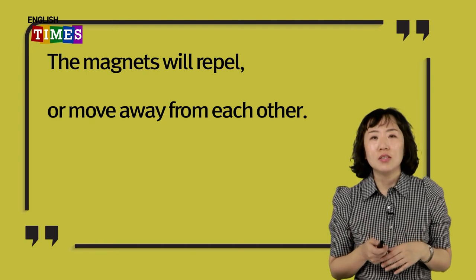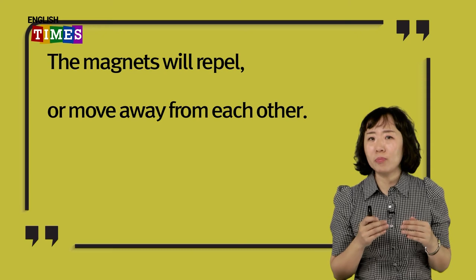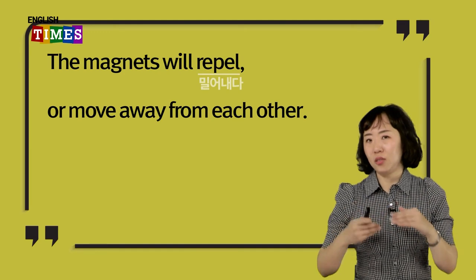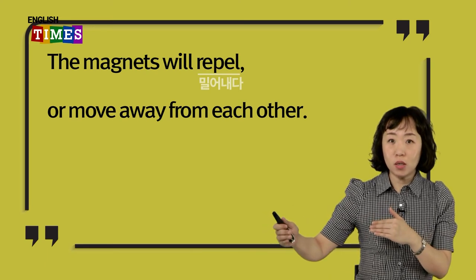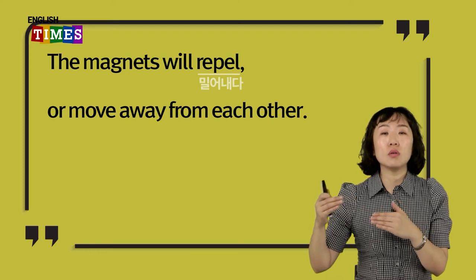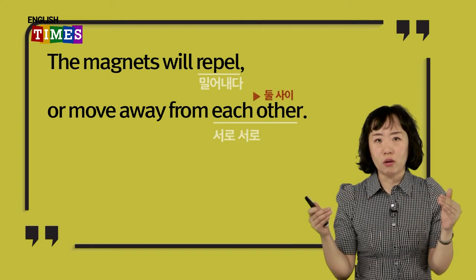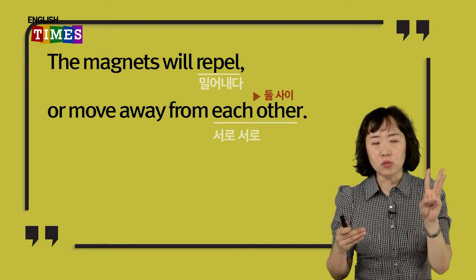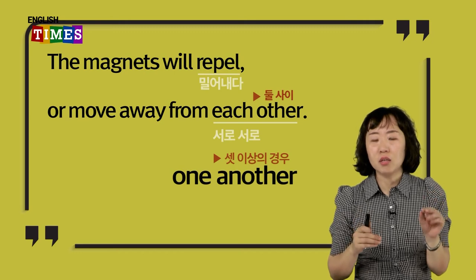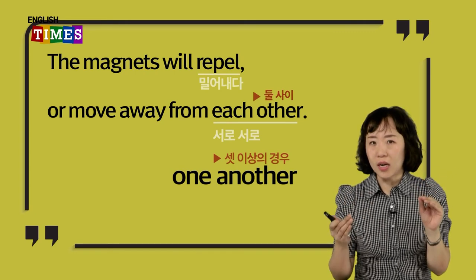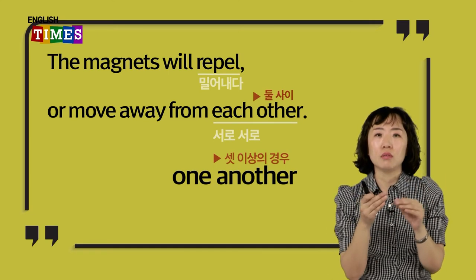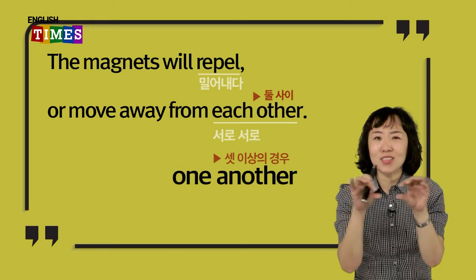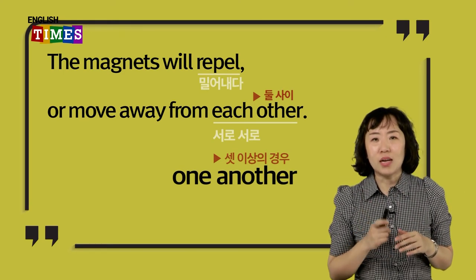Last sentence: 'The magnets will repel, or move away from each other.' Repel means to push away. 'Move away' — move means to move, and 'away' means far or distant. 'Each other' is used when there are two — for three or more, use 'one another.' So: the magnets will repel or move away from each other when the same poles are put together. Listen and repeat.